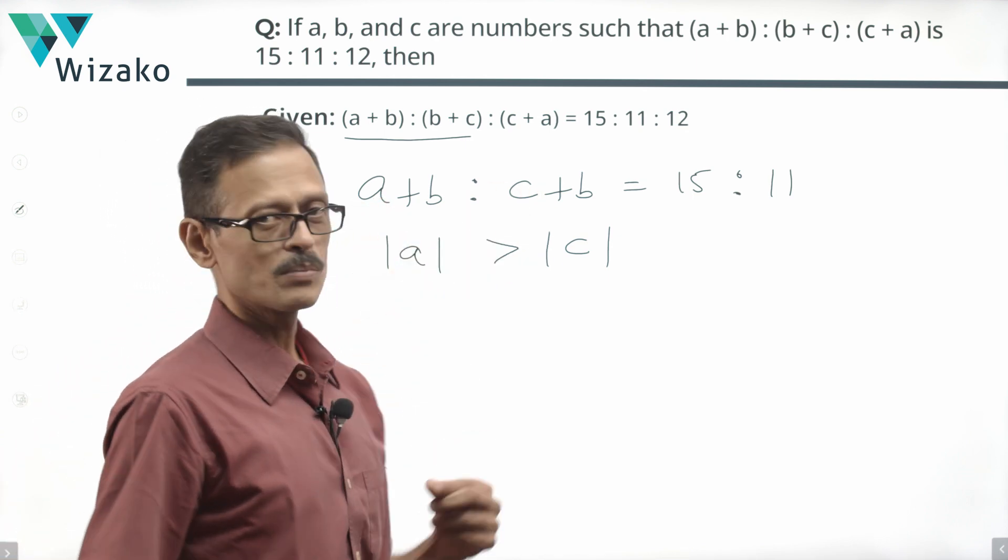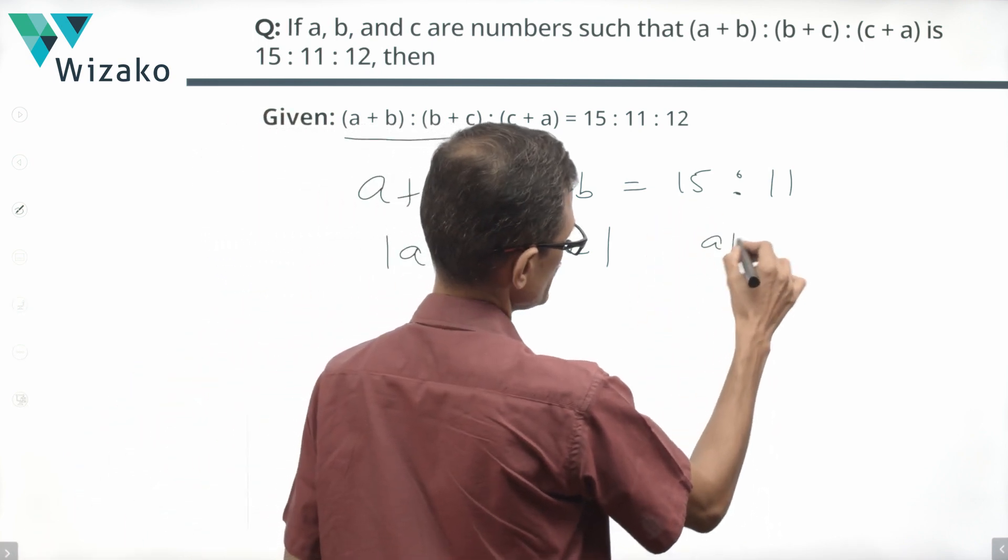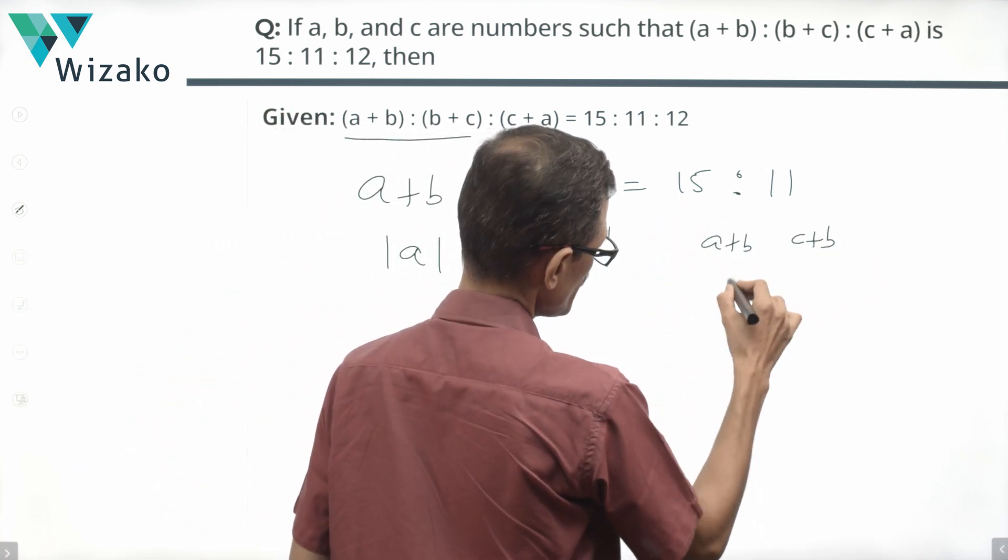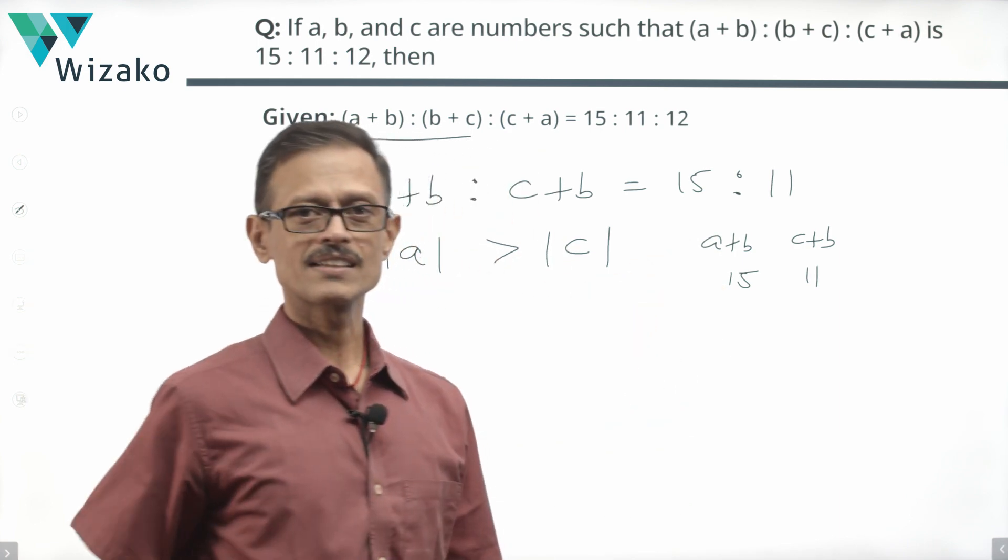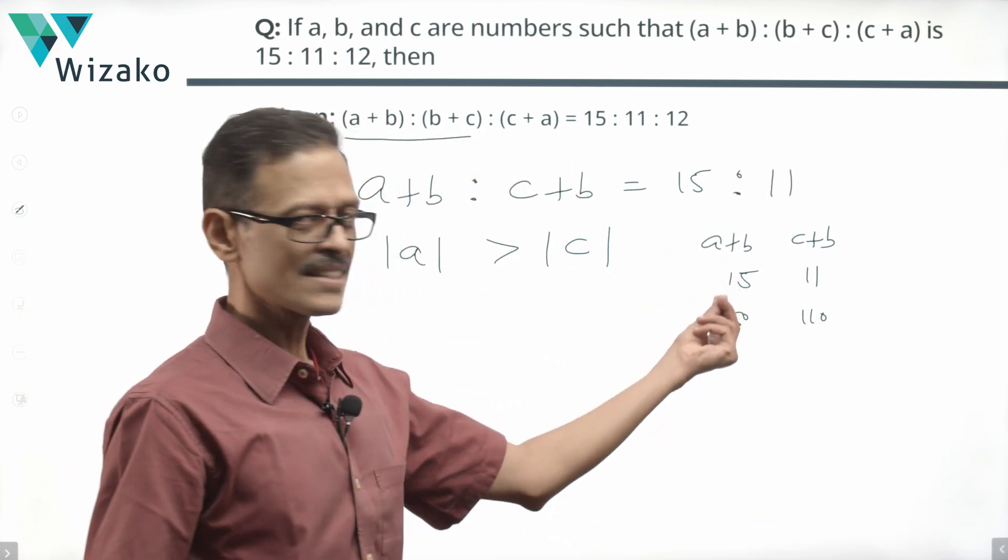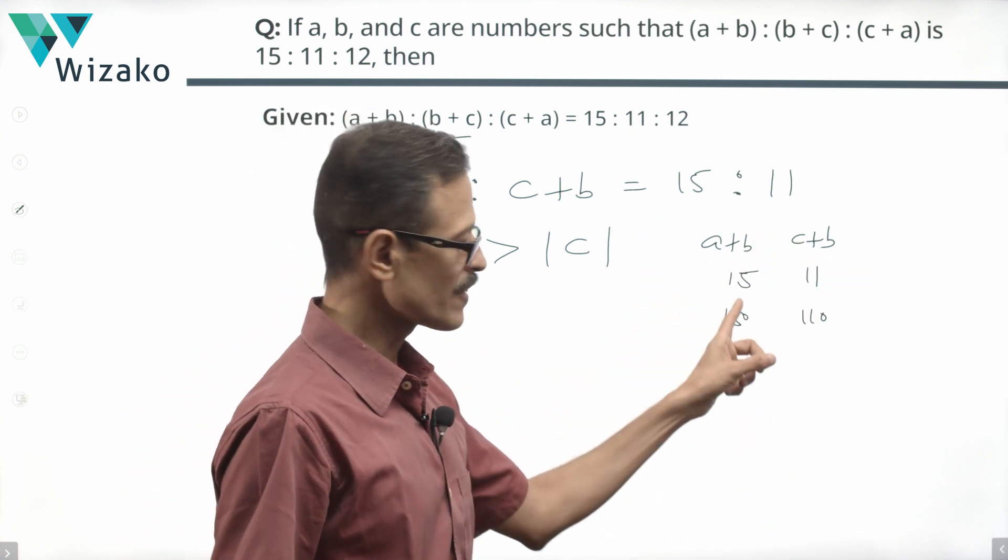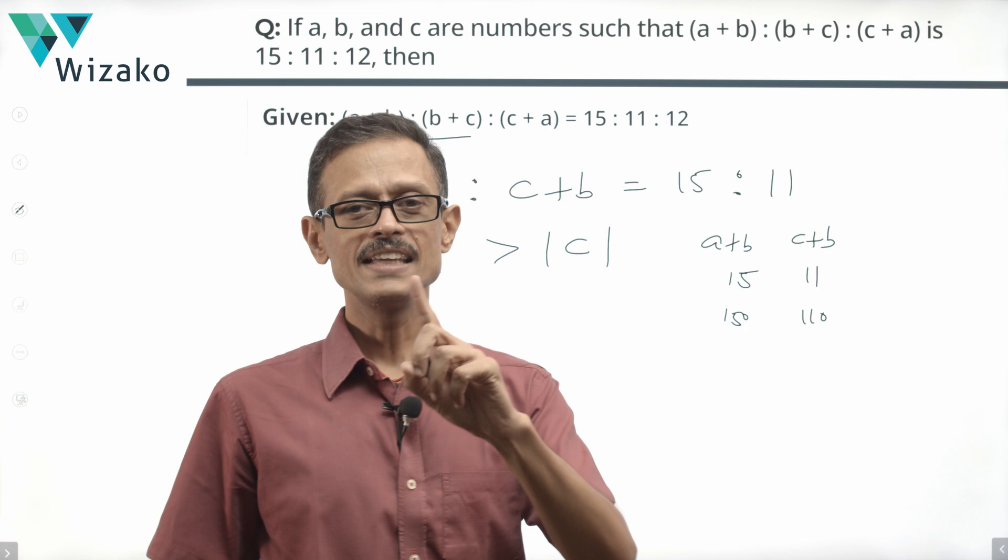For a moment, if a+b and c+b are in the ratio of 15:11, they could both be—a+b and c+b could be 15 and 11. Very well. Could have been 150 and 110. In this case as well, because b is not playing any role, it's only between a and c. Definitely, if this had been the case, a will be greater than c.